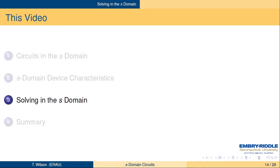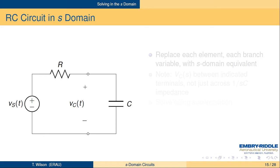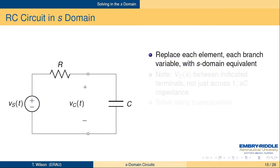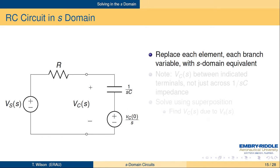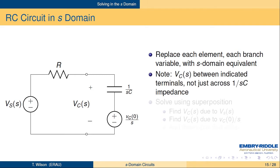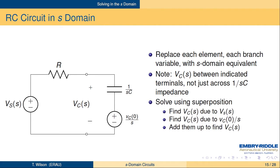So how do we put this together to solve a circuit? Here's our original circuit. We replace each element and each branch variable with its Laplace-domain equivalent. We've replaced the capacitor with the one over SC impedance in series with the VC of zero over S source. Note that the capacitor voltage in the S-domain is across both of those elements in series — the voltage between the terminal pair — so you have to have both the impedance and the initial condition. We can solve this using superposition: we'll find the capacitor voltage due to the source, the capacitor voltage due to the initial condition, and then add those up to get the capacitor voltage in the S-domain, then go back to the time domain.